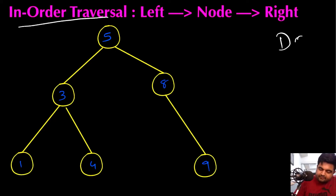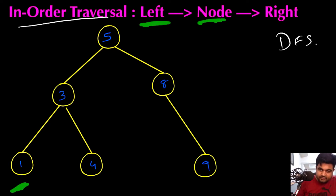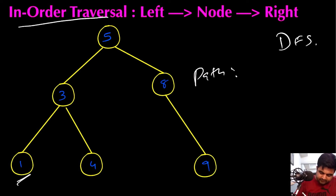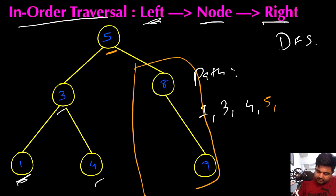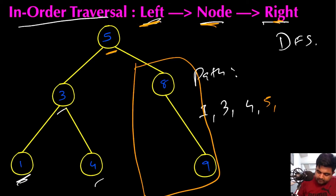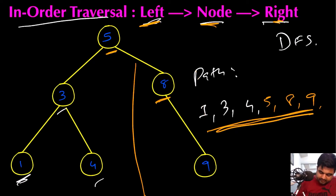In-order traversal is a depth-first search traversal where we go to the leftmost position first, then visit the node value, then visit the right subtree, and repeat. For this BST, we first visit node 1 (leftmost), then node 3, then node 4, following the left-node-right formula. After that we visit node 5, then move to the right subtree. Since the right side has no left children, we traverse node 8 and finally node 9. This gives us the path 1, 3, 4, 5, 8, 9 — which is in increasing sorted order.